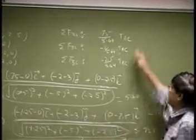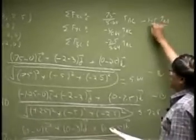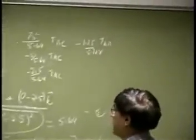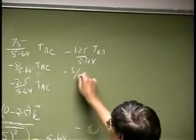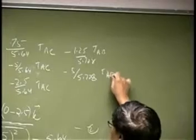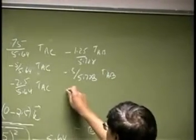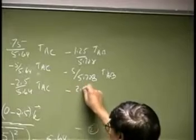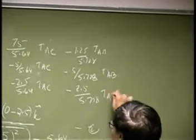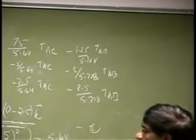Let me go here. We have negative 1.25 TAB divided by 5.728. Then you have negative 5, 5.728 TAB and there is one more which is negative 2.5, 5.728 TAB. So all three of these became this column.